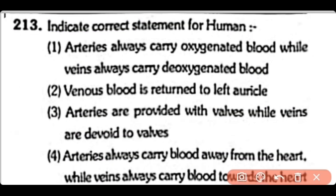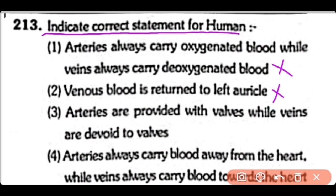Which statement is correct about arteries and veins? Option 4 states: Arteries always carry blood away from the heart, while veins always carry blood towards the heart. So the correct answer is Option 4.